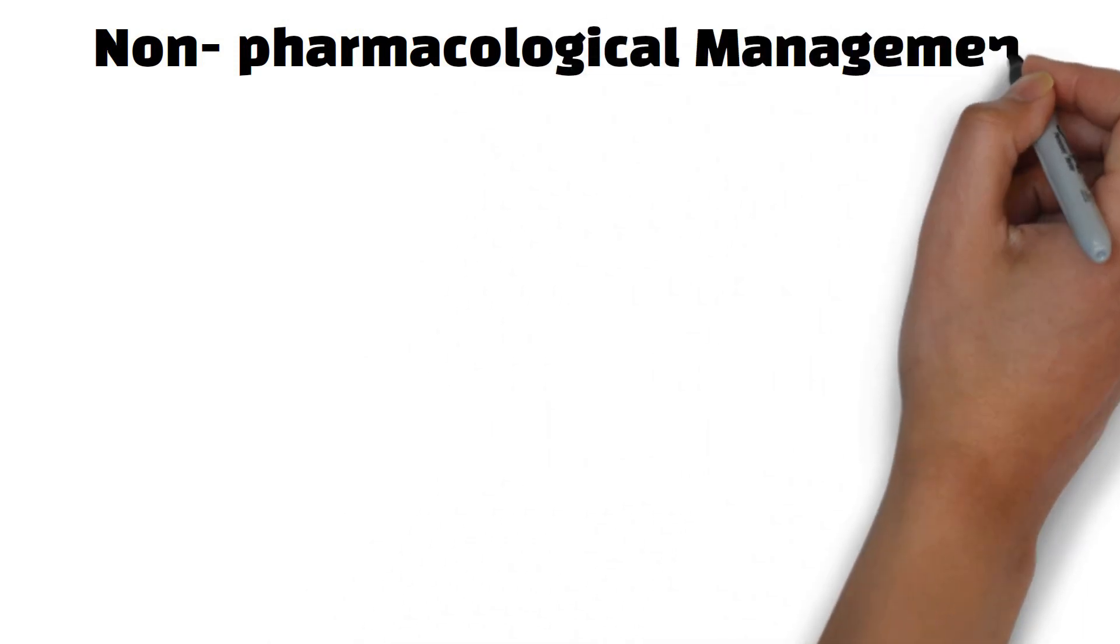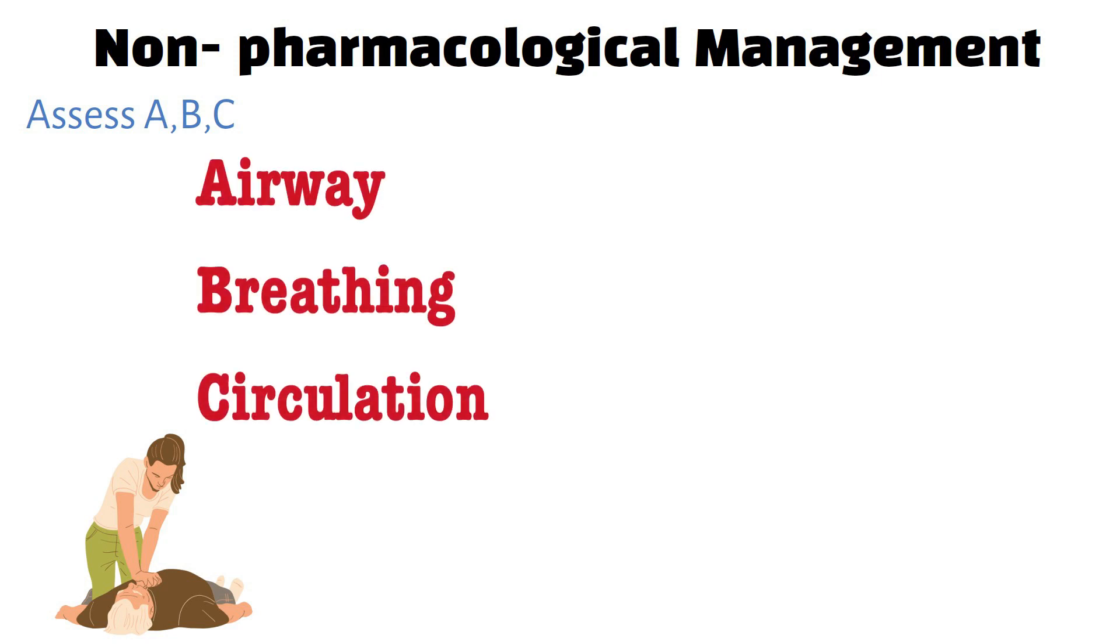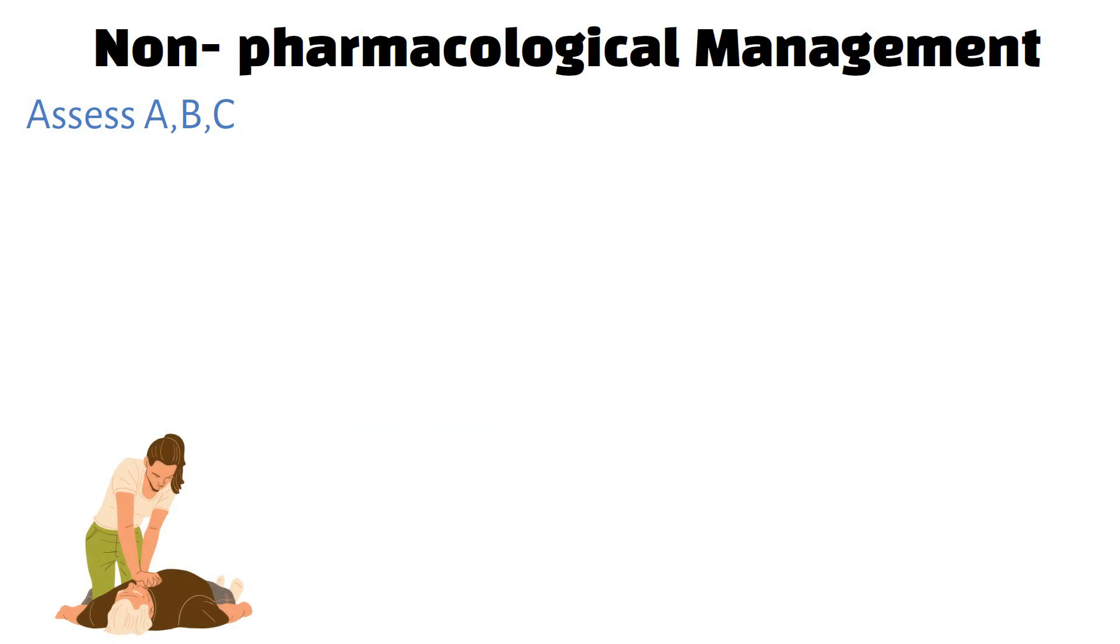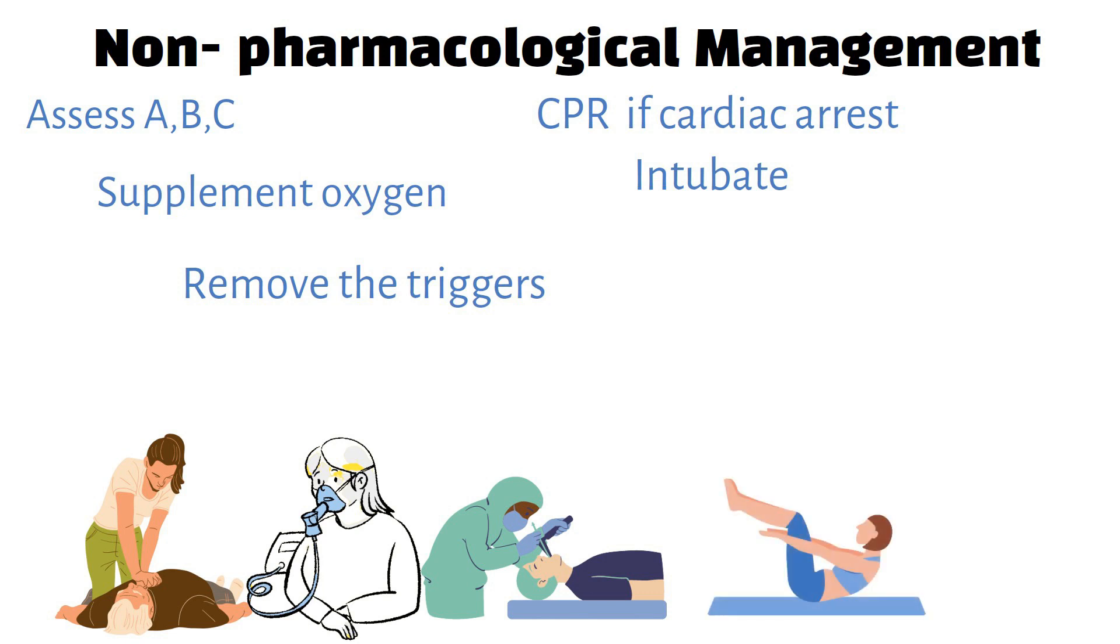In the acute non-pharmacological management, we admit the patient to the acute side bed and assess ABC—that is airway, breathing, and circulation—and perform CPR in case of cardiac arrest. If the patients are in respiratory distress, supplement oxygen, and if there's a respiratory obstruction, intubate the patient. While doing all that, remove the triggering allergen if present and raise the legs to improve circulation.